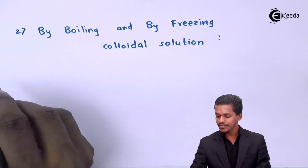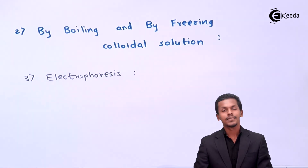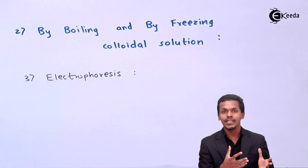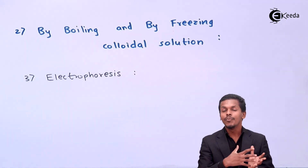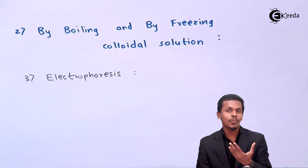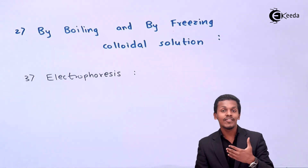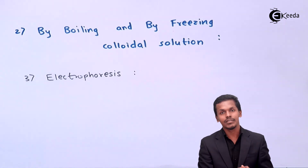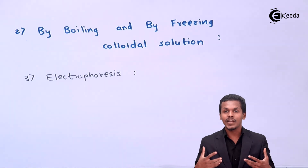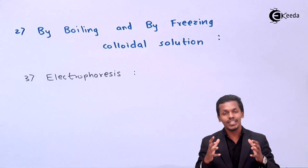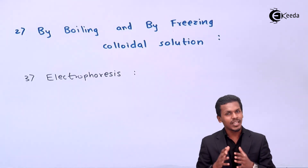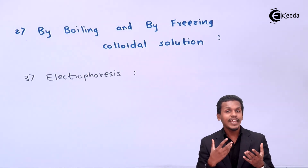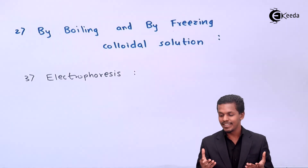The third method is coagulation by electrophoresis. We have done a lecture on electrophoresis and learned that colloidal particles, being of positive or negative charge, move towards the oppositely charged electrode. When they associate with the electrode, they get discharged. Once discharged, the nearby colloidal particles try to agglomerate and form bigger particles. This precipitation causes the coagulation of the colloidal particles. So by electrophoresis also, we can easily coagulate colloidal particles.